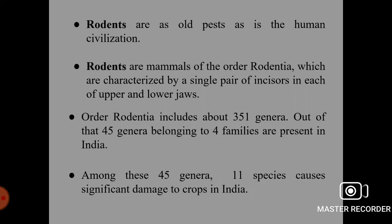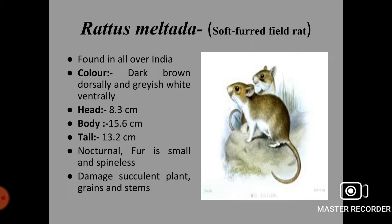The first species is Rattus meletada, the soft-furred field rat. It is found all over India. The color is dark brown dorsally and grayish white ventrally. Head length is 8.3 cm, body length is 15.6 cm, and tail length is 13.2 cm. This species is nocturnal, meaning active during night. The fur is small and spineless. It mainly damages succulent plants, grains and stems.